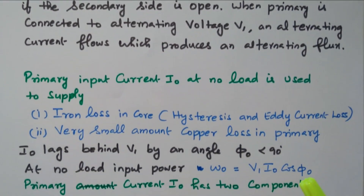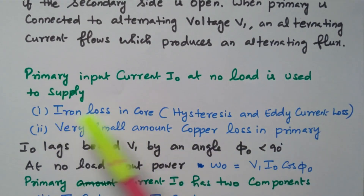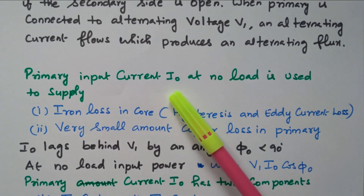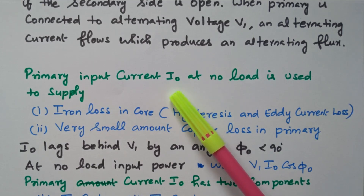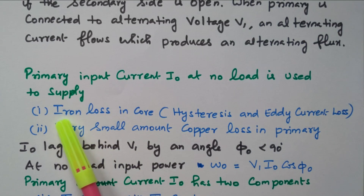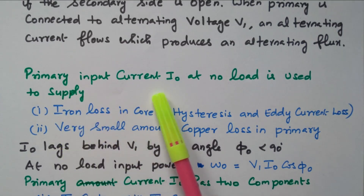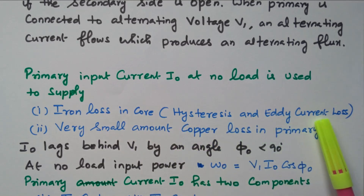The primary input current I0 at no load is used to supply a small amount of current flowing in the primary, because the secondary is still open — no load is connected. This small current has two components: one is for iron loss in the core, that is hysteresis and eddy current loss.